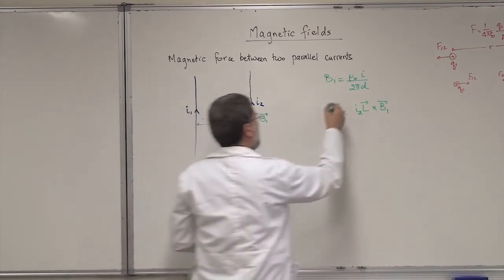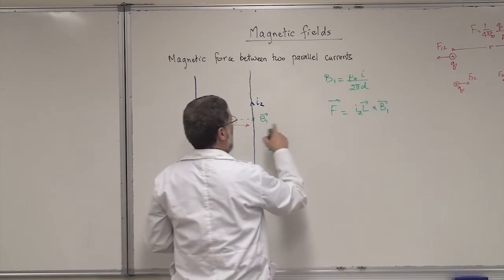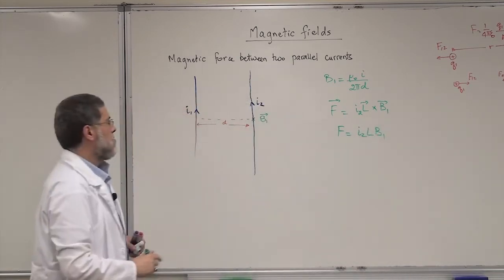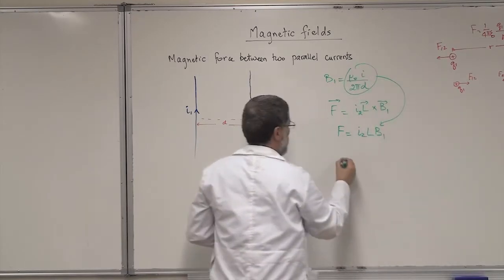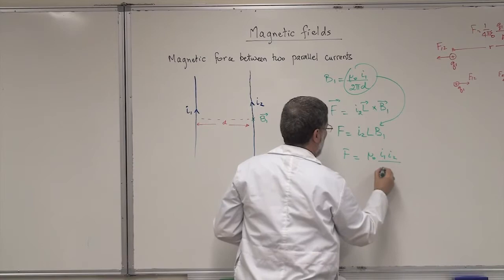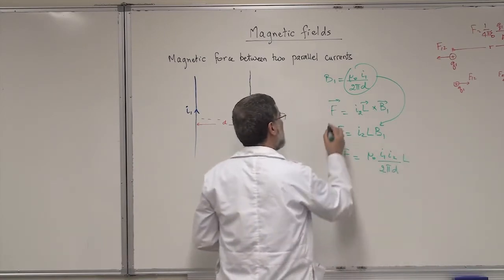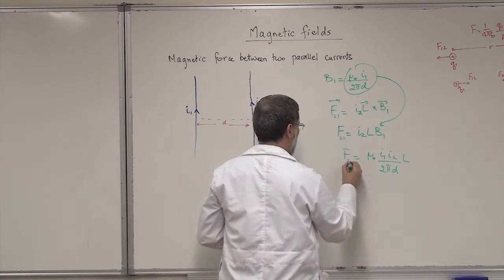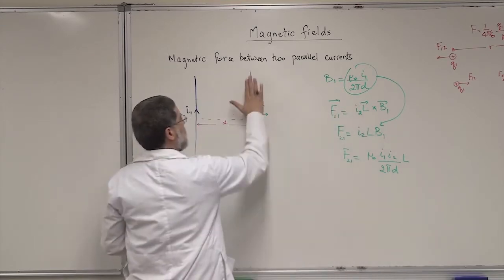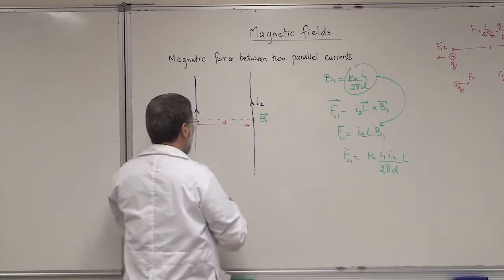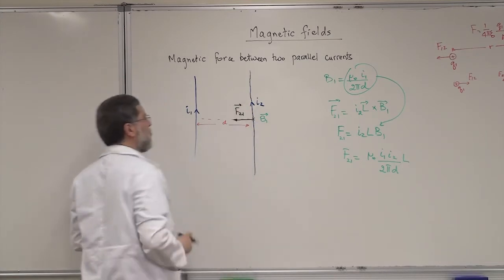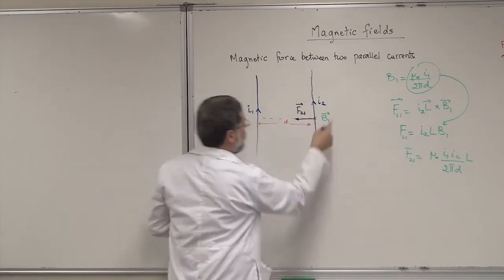Since I2 and B1 are perpendicular, the magnitude of the force simplifies to F equals I2 times B1 times L. Substituting B1, we get F equals mu-zero I1 I2 over 2 pi d, times the length L. I call this F21 — the force on wire 2 due to wire 1. Using the cross product right-hand rule, with current I2 and B1 pointing into the page, the force is directed to the left — toward wire 1.